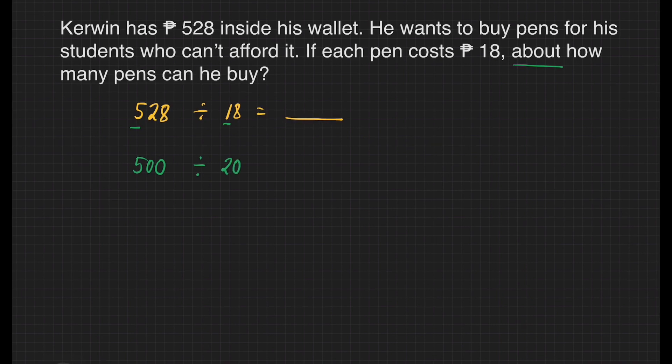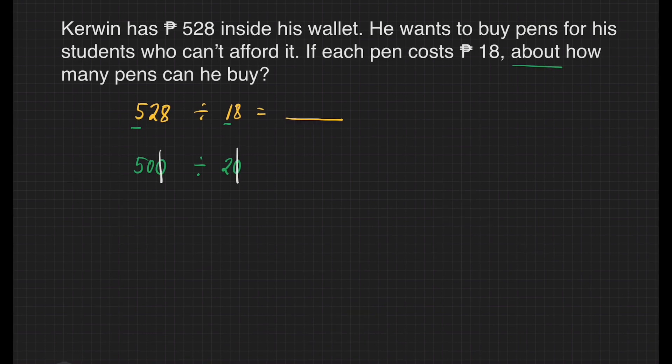We're ready to divide, but before that, we have to cancel as many zeros in the dividend as there are in the divisor. So we cancel one zero from our dividend and one zero from our divisor. Now what's left is 50 divided by 2, and that will give us 25. It means Sir Kerwin can buy about 25 pens for his students.